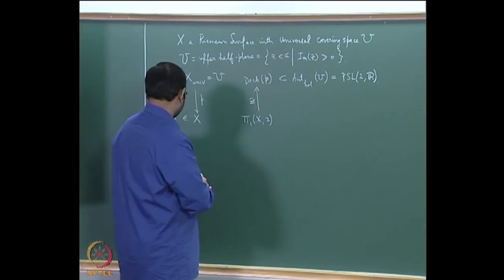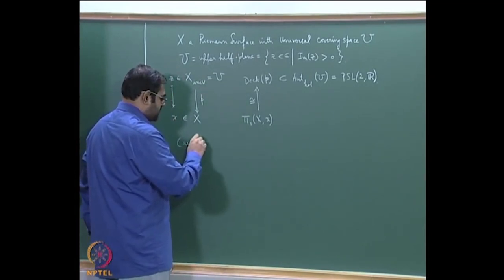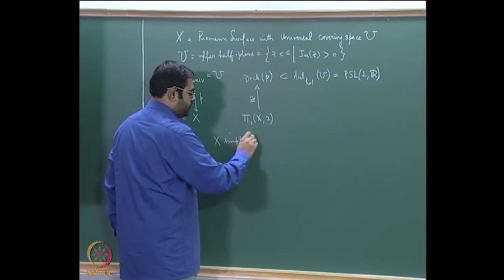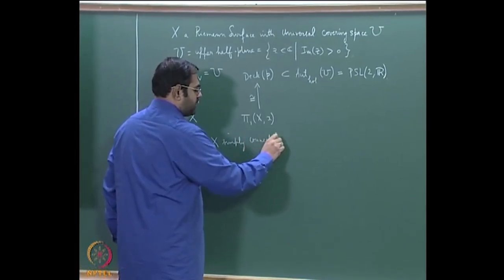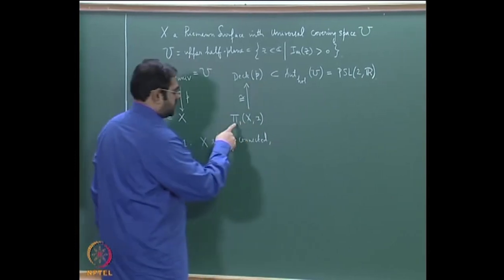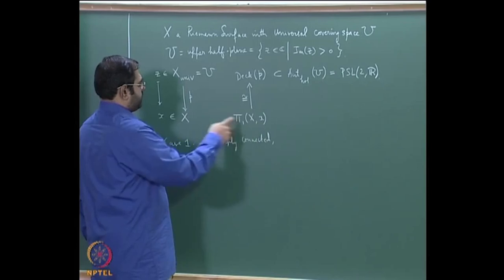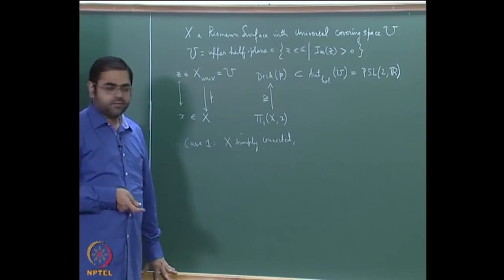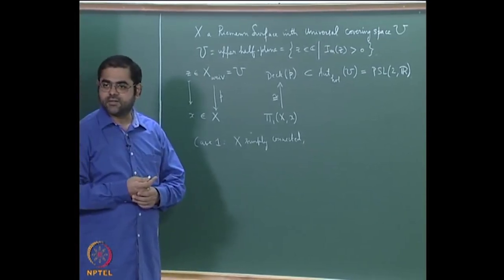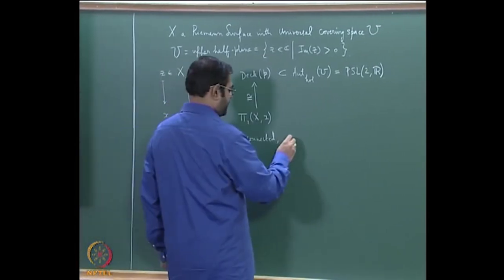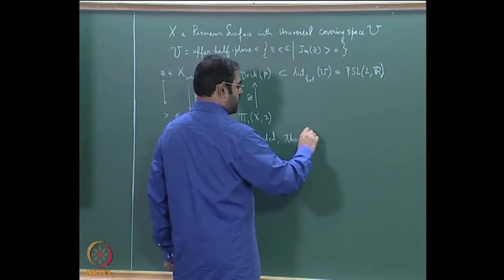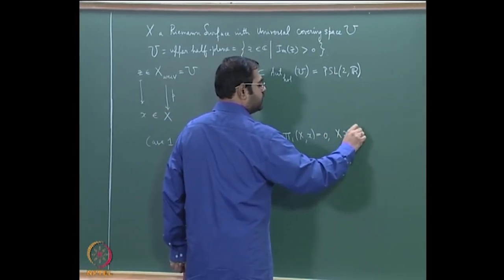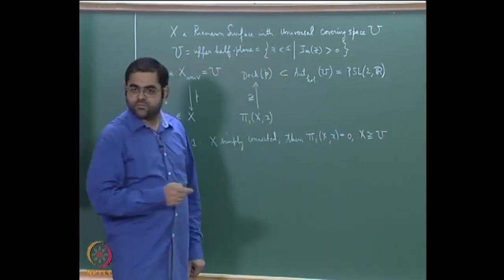There were three cases. Case 1 was the trivial case: if X is simply connected, then the fundamental group is trivial and the identity map is the universal covering. By uniqueness of the universal covering, X must be biholomorphic to U itself, and π₁(X, x) = 0.